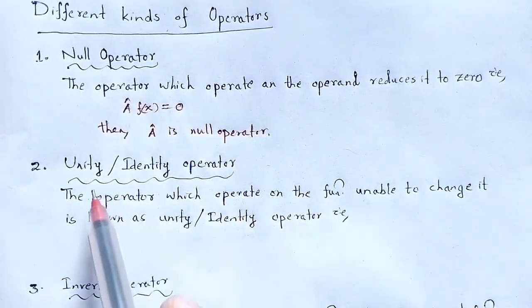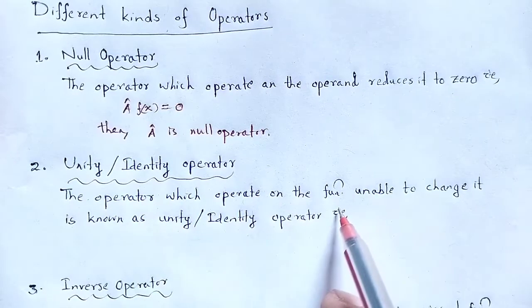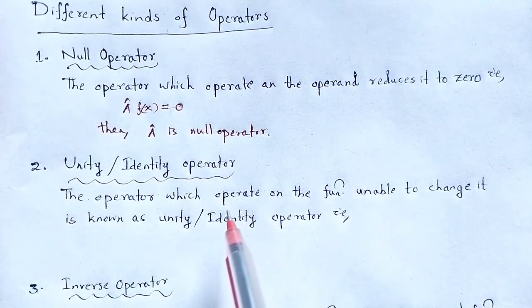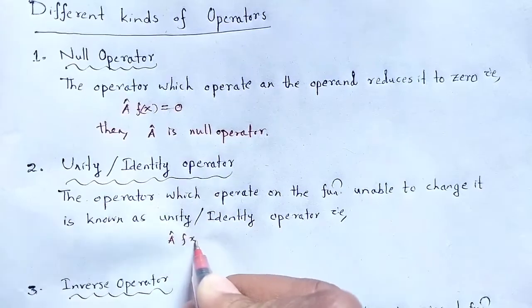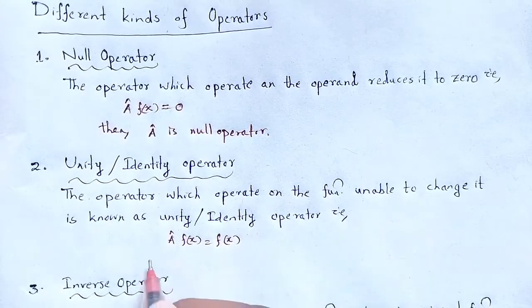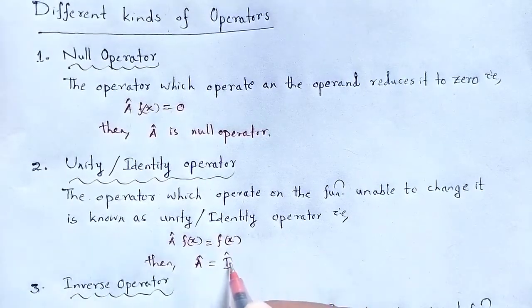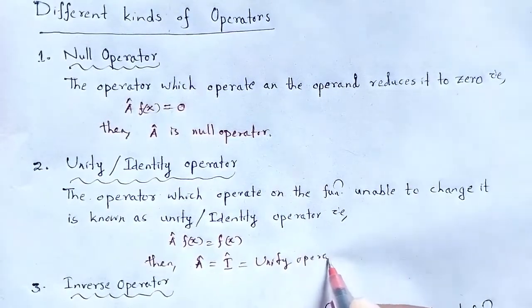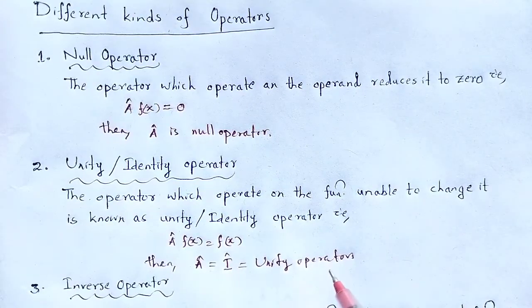Another type of operator is the unit or identity operator. The operator which operates on a function but is unable to change it is known as the unity or identity operator. When that operator operates over a function and gives rise to the same function — meaning there is no change in the function — then that operator is known as I-cap, the unity operator.